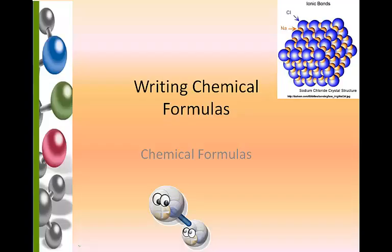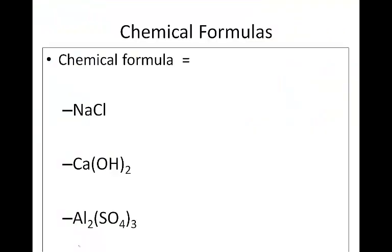Writing Chemical Formulas. A chemical formula is a combination of chemical symbols that represent the composition of a compound. Here we see NaCl — simply two symbols, one for sodium and one for chlorine.